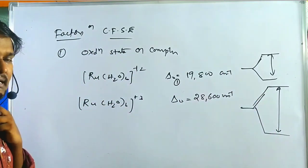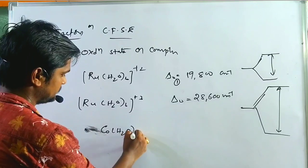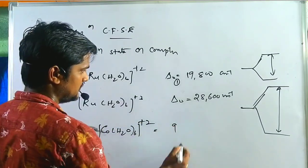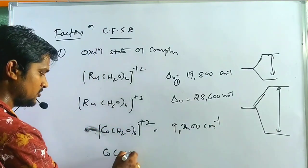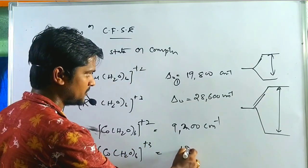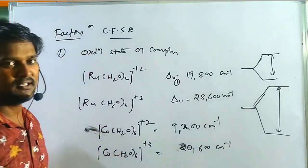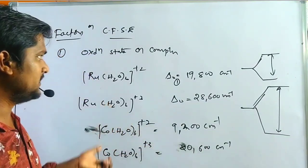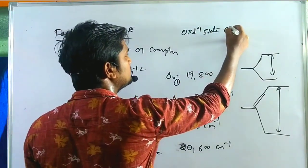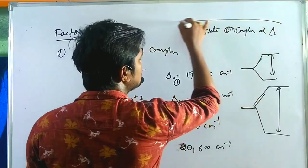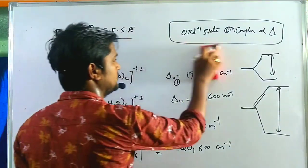Another example: [Co(H₂O)₆]²⁺ has a delta O of approximately 9,200 cm⁻¹, while [Co(H₂O)₆]³⁺ has approximately 20,600 cm⁻¹. In both cases we conclude that oxidation state is directly proportional to the crystal field splitting energy.